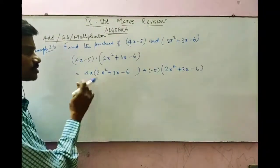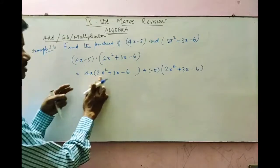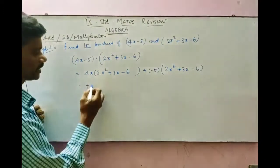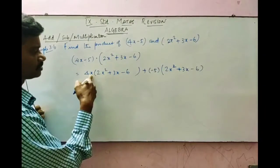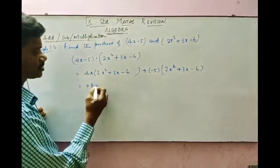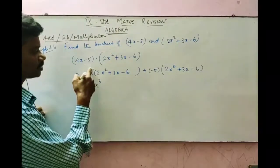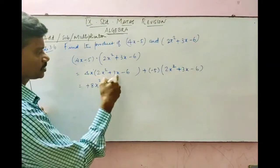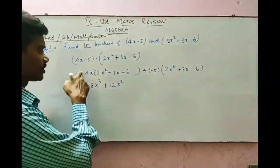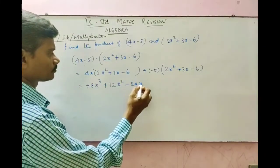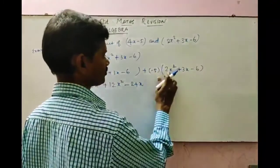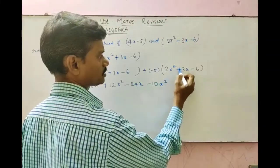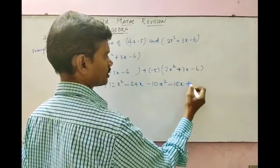Multiply 4x with each of the three terms. 4x into 2x squared: plus times plus is plus, 4 times 2 is 8, x times x squared gives x cubed (add powers: 1 plus 2 equals 3), so 8x cubed. Then 4 times 3 is 12, x times x gives x squared, so 12x squared. Then plus times minus is minus, 4 times 6 is 24, so minus 24x. Now multiply minus 5 with each term: minus 5 times 2 is minus 10x squared; minus 5 times plus 3 is minus 15x; minus 5 times minus 6 is plus 30.